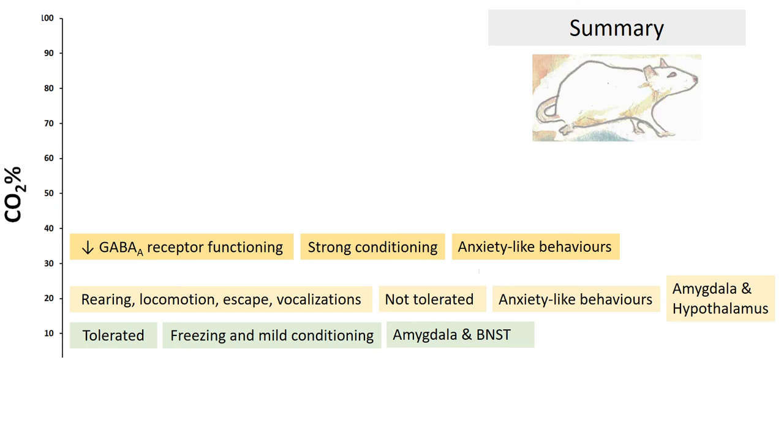Exposure to 35% CO2 decreases GABA receptor functioning, induces strong conditioning and anxiety-like behaviors.